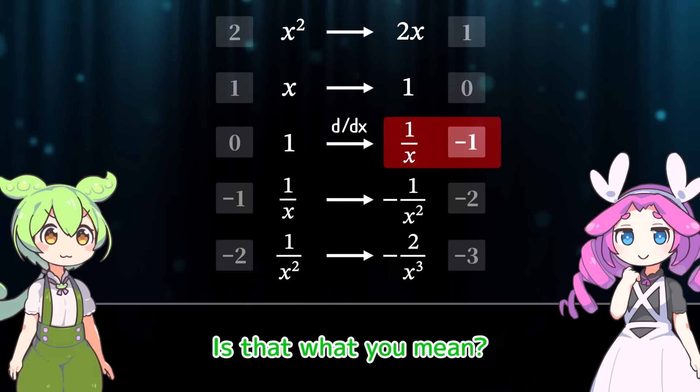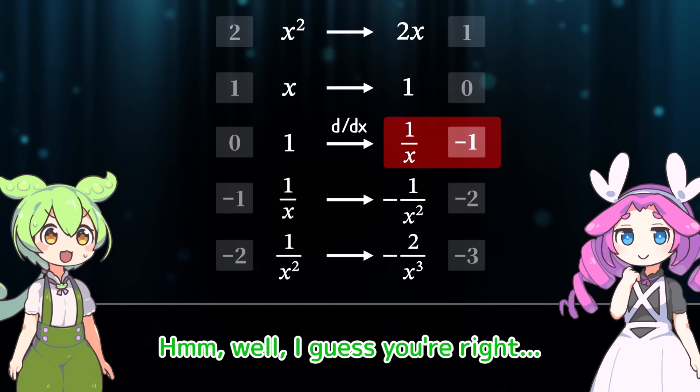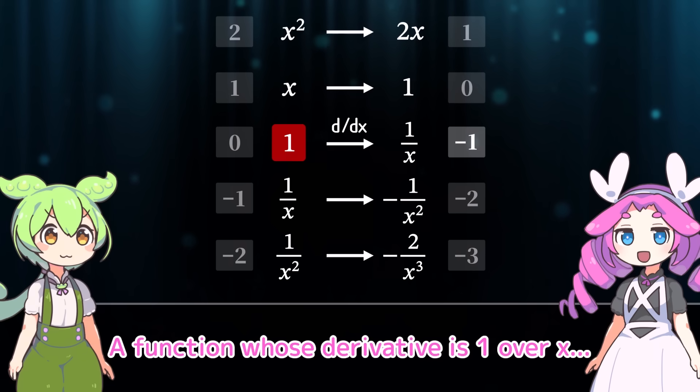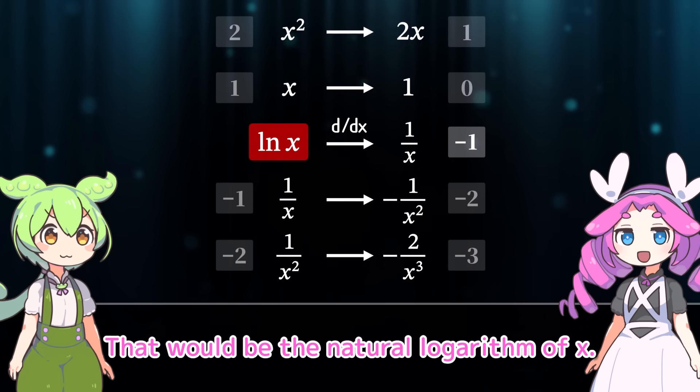Um... Is that what you mean? Hmm. Well, I guess you're right. Then we can't leave this as 1. Yes, that's true. A function whose derivative is 1 over x. That would be the natural logarithm of x.